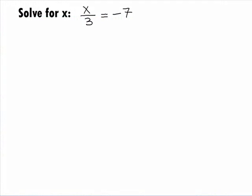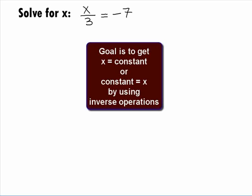In this example, we want to solve the equation x divided by 3 equals negative 7 for x. The goal here is to get x by itself on one side and everything else on the other side using inverse operations.